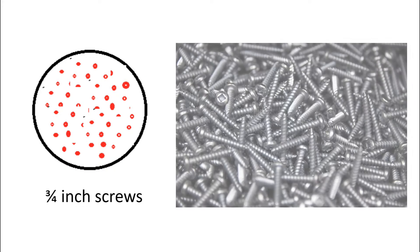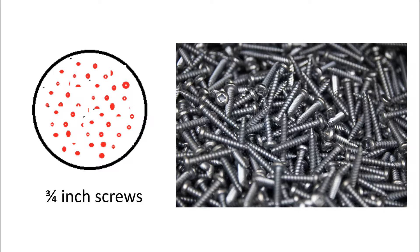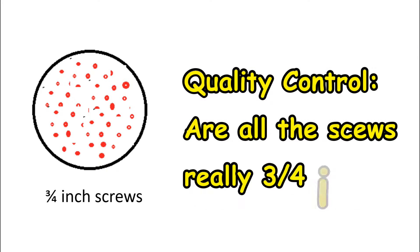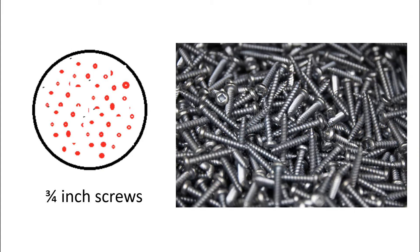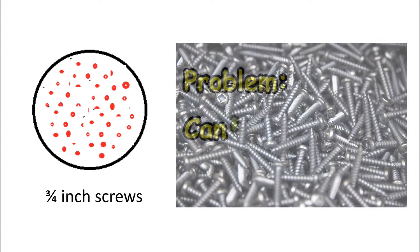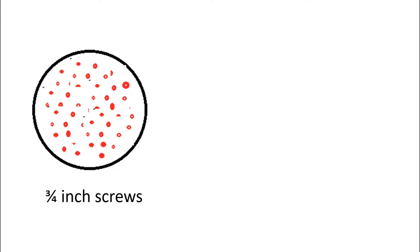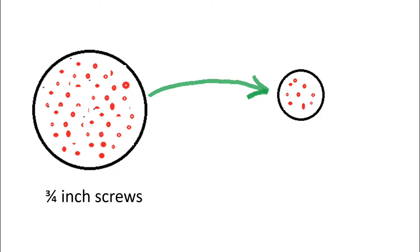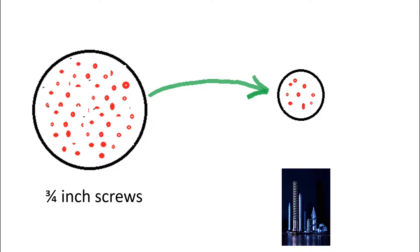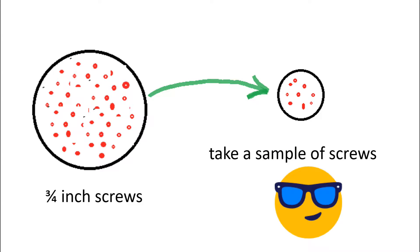Let's say you've manufactured a large batch of three-quarter-inch screws. The screws have to be the right diameter to fit into other parts, so you need to check to make sure the screws are really three-quarters of an inch. But you can't examine every single screw — they come off the machine by the hundreds, if not thousands. So you take a sample: a portion of the screws, and based on the results, you infer that the population is similar to the sample if the sampling is done right.